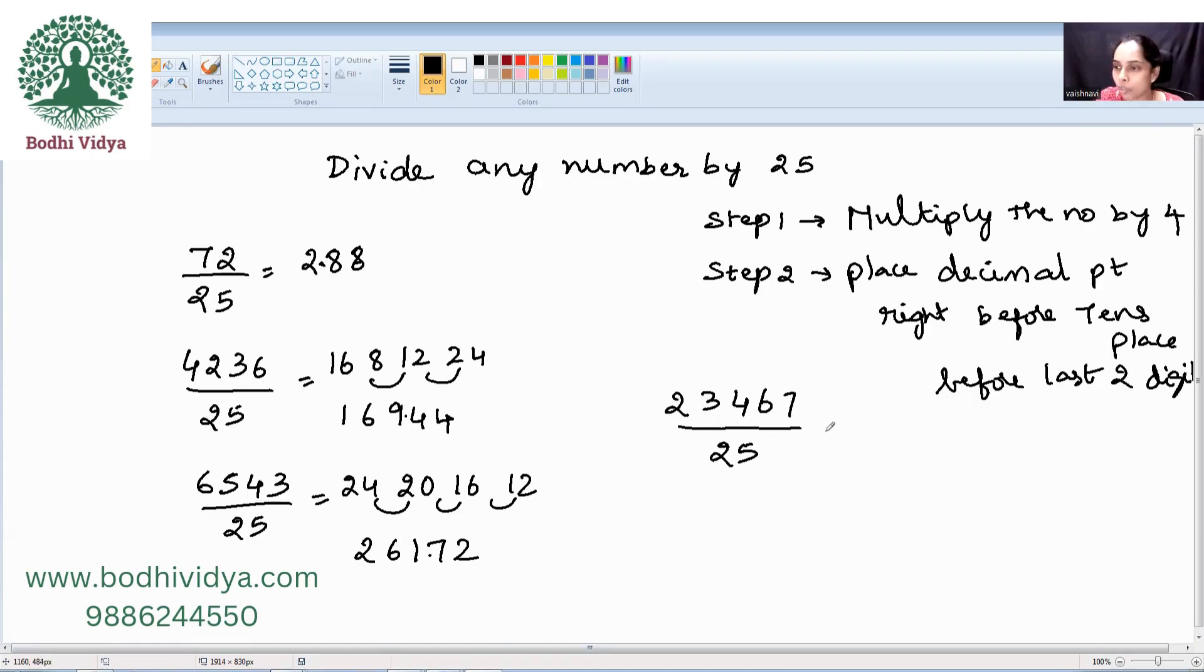Now, one last example. 4 times 2 is 8, 12, 16, 24 and 28. Wherever you have two digits, you need to push it up. 93868. Place the decimal point before the last two digits. So, it's here. So, the final answer is 938.68.